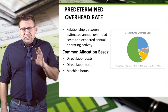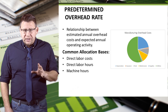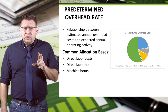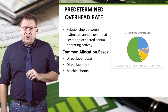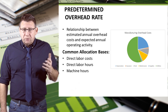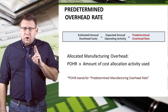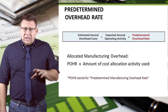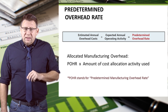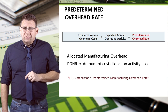The predetermined overhead rate, sometimes referred to as a plant-wide rate, is based on the relationship between estimated annual overhead costs and expected annual operating activity. It calculates an estimated amount of manufacturing overhead assigned to jobs based on activity like direct labor costs, direct labor hours, or machine hours. The formula is: budgeted annual manufacturing overhead dollars divided by the estimated amount of allocation base. Then the rate is used to apply overhead to jobs.